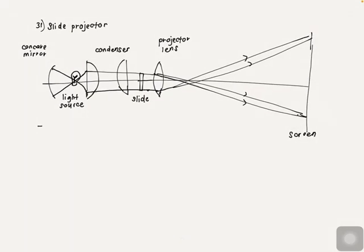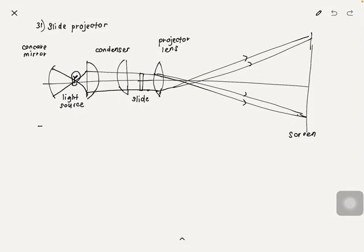Now we look at the slide projector. It has a concave mirror, light source, condenser, slide projector lens, and screen. You don't need to know how to draw a slide projector — you need to know how to identify it. The projector is an instrument used to produce the large image of a small object.